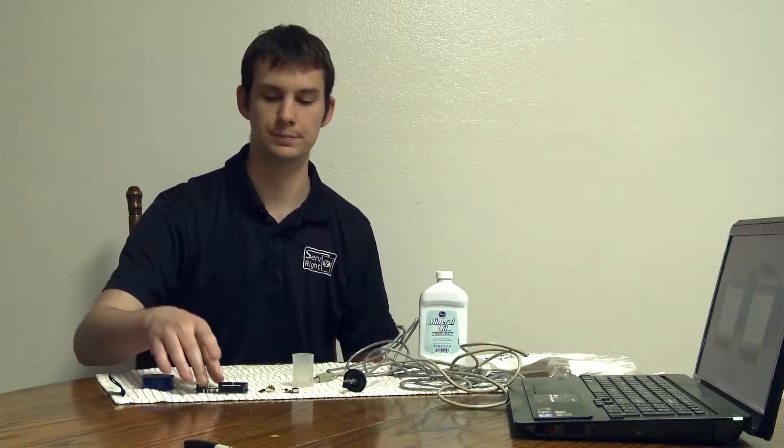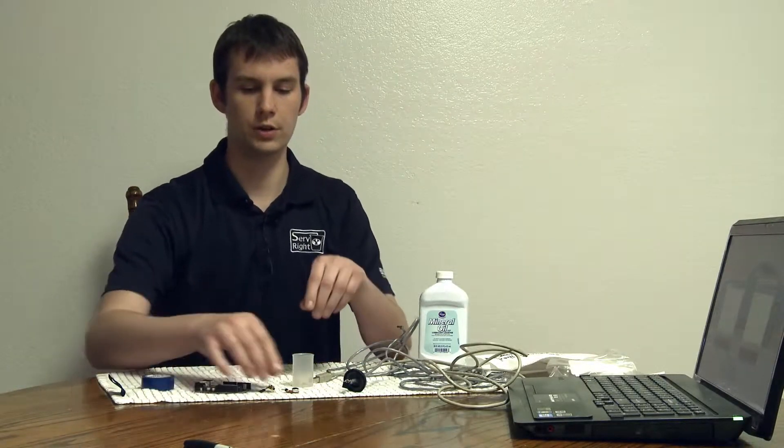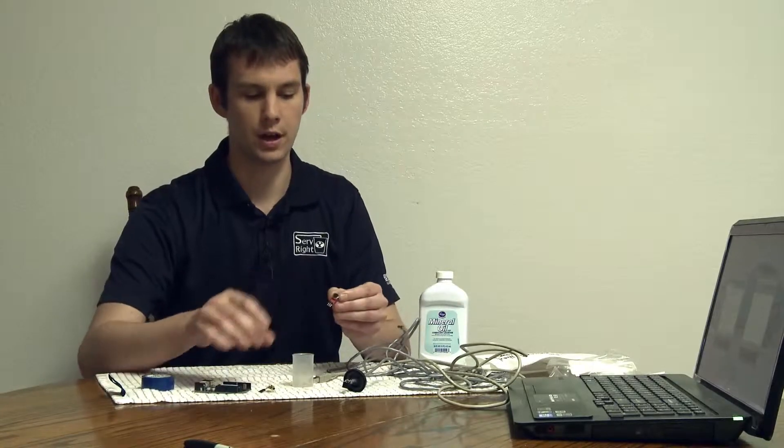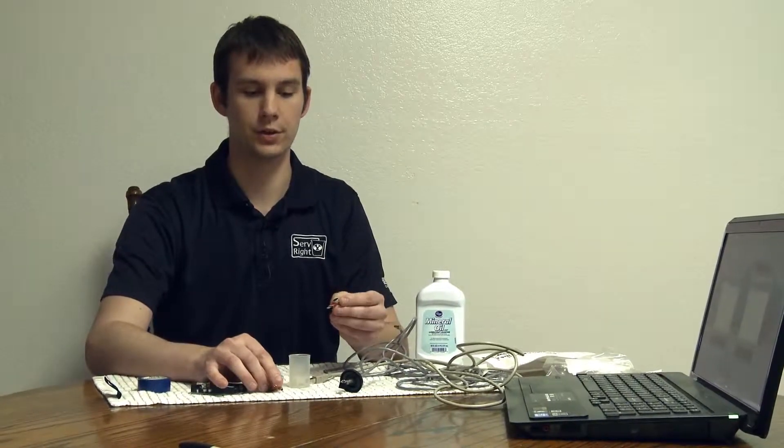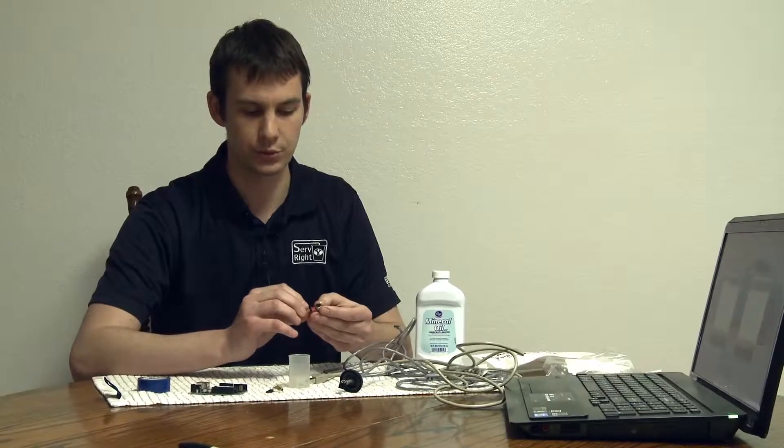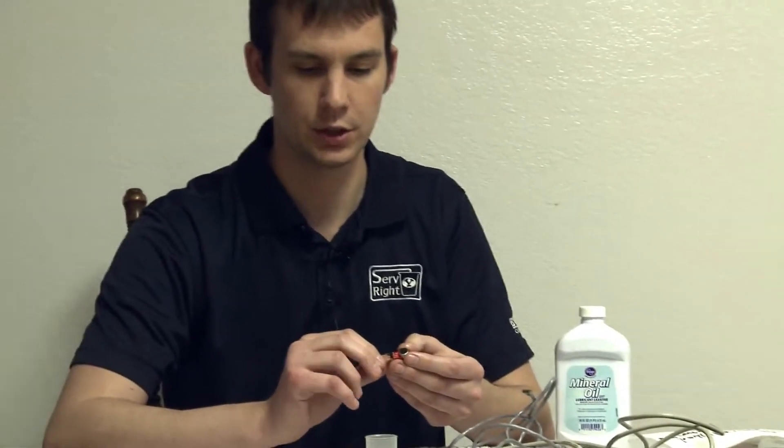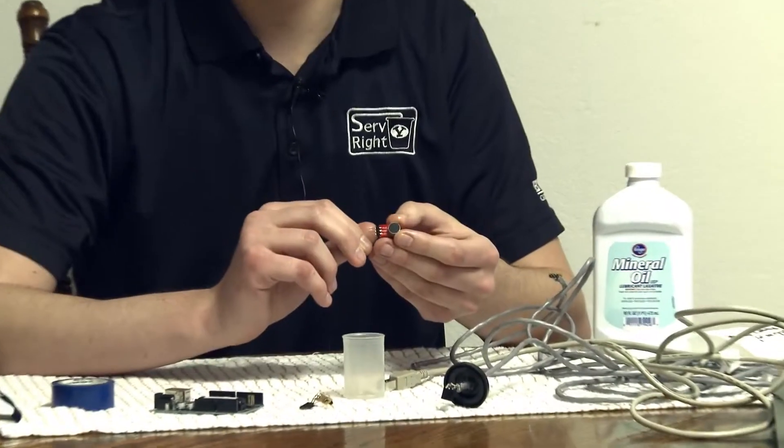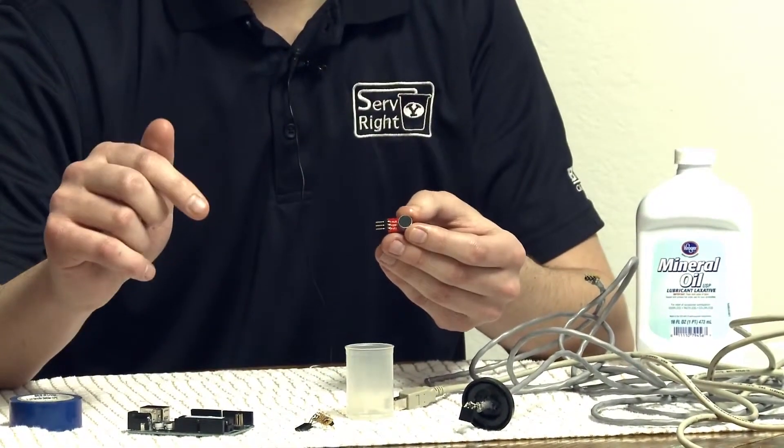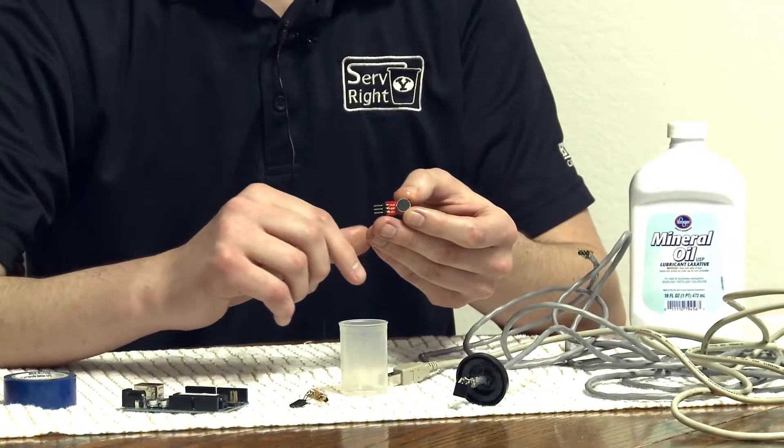So we're going to talk about how to solder this thing. First of all, you're going to want to solder your microphone. Now you'll notice that there's three ports coming out: an audio, a ground, and a VCC. You want to make sure that those correspond to those going into the Arduino.